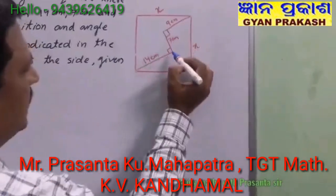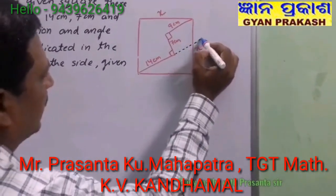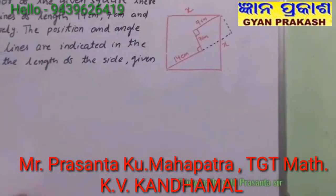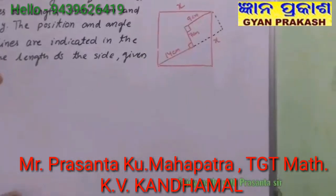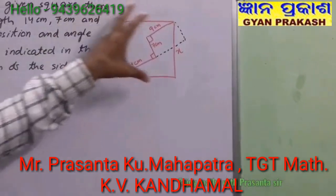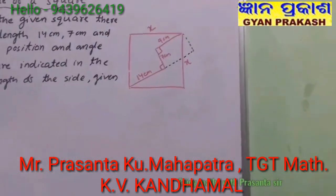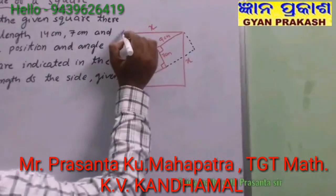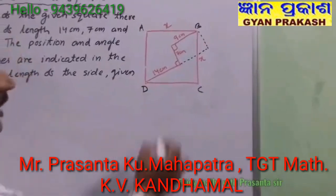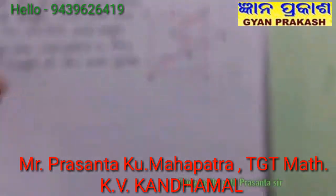If I extend this line and this one, what do I get? I get one rectangle. Now, let us proceed by naming the figure. Let the corners be A, B, C, D, and let these points be E, F, and G.